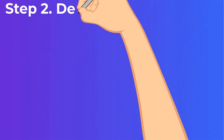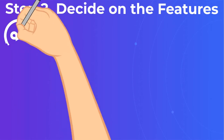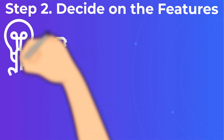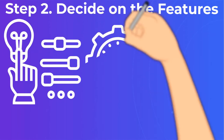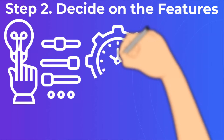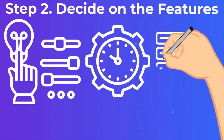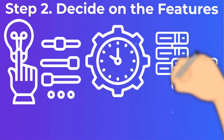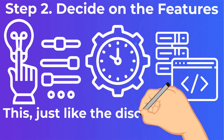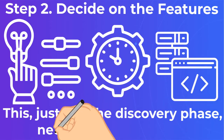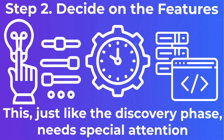Step 2: Decide on the Features. This, just like the discovery phase, needs special attention. What functions will be in your application will make it stand out in the market, but at the same time, you cannot overdo it with the number of features — this will drag out the development time and make the application's code significantly heavier.